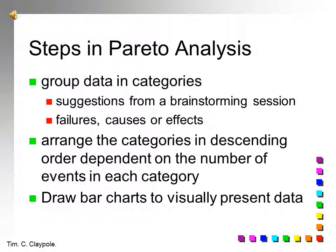So what are the steps in Pareto analysis? Firstly, we group the data into categories. These can be suggestions from a brainstorming session, or it could be failures, causes or effects. You arrange the categories in descending order, dependent on the number of events in each category. And then draw bar charts to visually present the data.